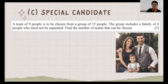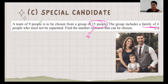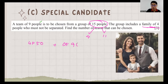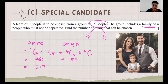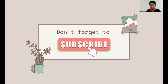One last question: a team of 9 is chosen from 15 people, which includes a family of 4 who must not be separated. We separate the family of 4 and are left with 11. Either all four family members are chosen (4C4 × 11C5) or none of them are (4C0 × 11C9). The answer is 570. That is the end of combination — we have now completed the permutation and combination chapter. See you in the next chapter, bye-bye!